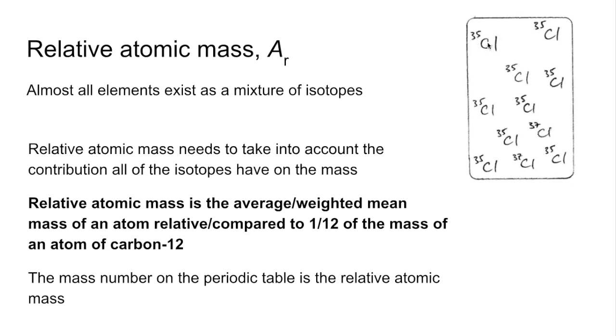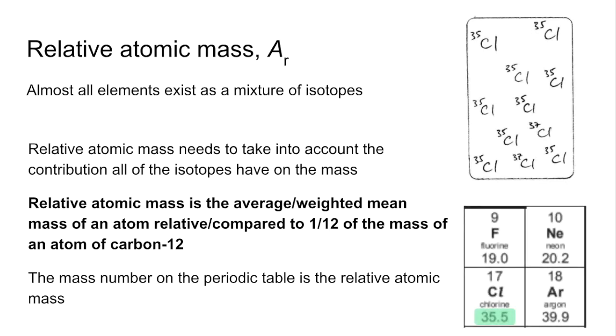So the relative isotopic mass of that one there is 35, whereas that one is 37. But a sample of chlorine, which has a mixture of the isotopes in, well that needs to take into account the proportions of each isotope. So what do we see on the periodic table? We see 35.5.